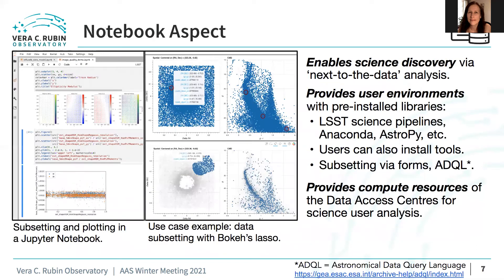The notebook aspect provides a venue for users to perform next-to-the-data analysis of the LSST data products. Shown here is an example Jupyter notebook where the user writes code and interacts with outputs such as plots. To the right is an example of subsetting the data in a globular cluster using the Bokeh package's lasso function. The notebook aspect provides environments with pre-installed libraries, for example the LSST science pipelines or Anaconda, and also allows users to install their own packages and tools.